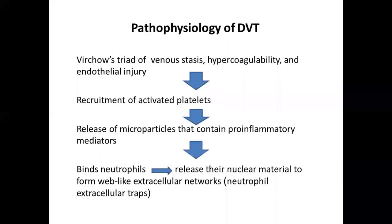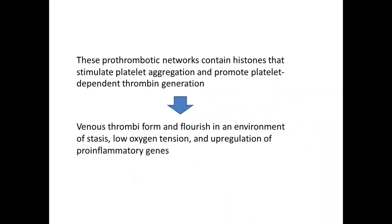Moving on to the pathophysiology of deep vein thrombosis — how does it occur? You all know about Virchow's triad, which consists of venous stasis, hypercoagulable state, and endothelial injury. Especially when there is endothelial injury in the vessel, this leads to recruitment of activated platelets, which leads to the release of microparticles containing pro-inflammatory mediators. These mediators bind to neutrophils and cause release of nuclear material, forming wave-like extracellular networks known as neutrophil extracellular traps, which stimulate more platelet aggregation and promote platelet-dependent thrombin generation.